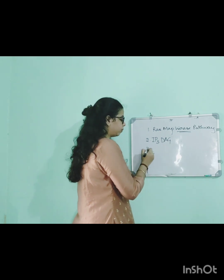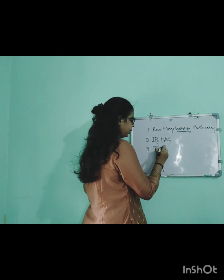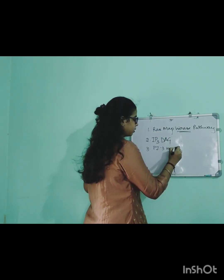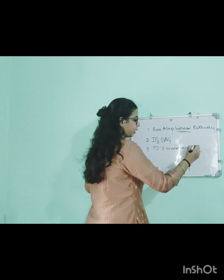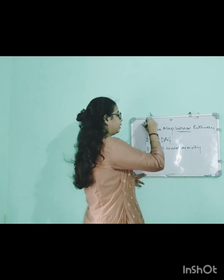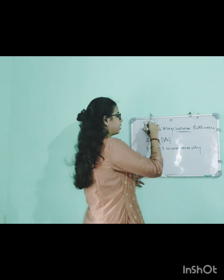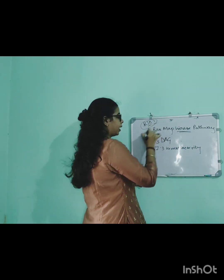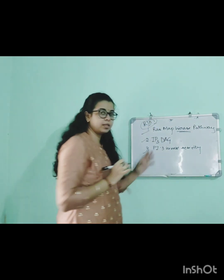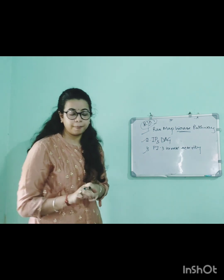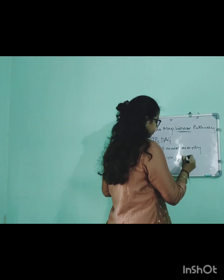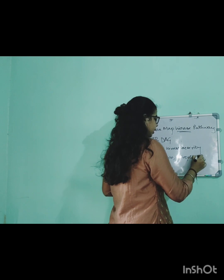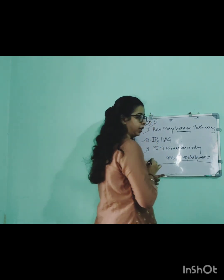The receptor tyrosine kinase follows several pathways including the PI3 kinase pathway and phospholipase C pathway. It can also activate certain other proteins after activation.